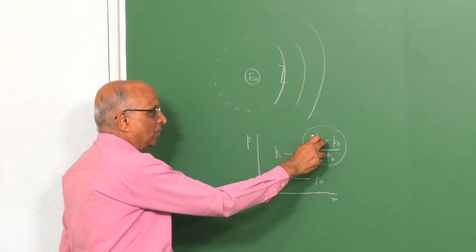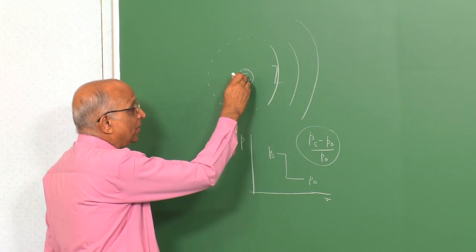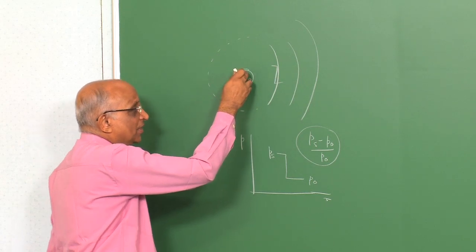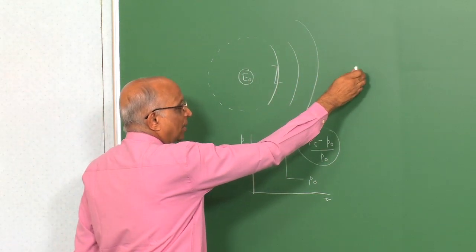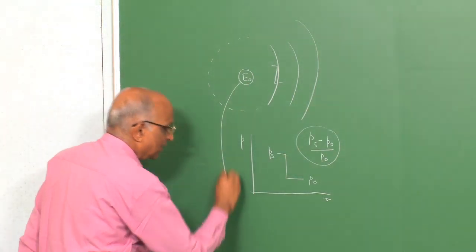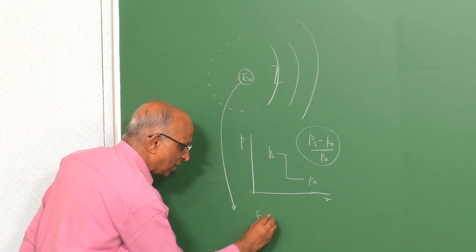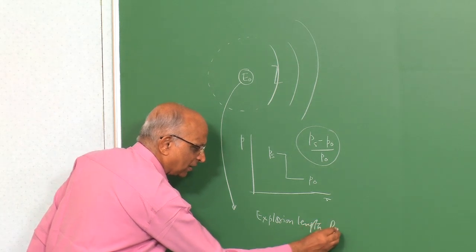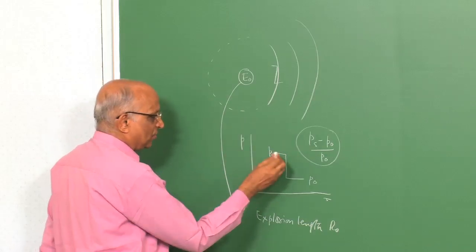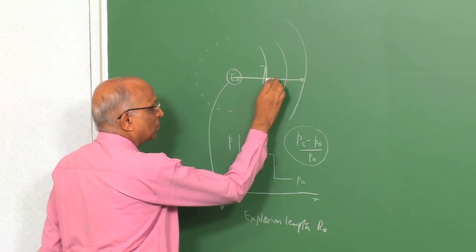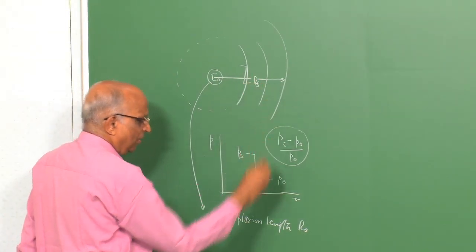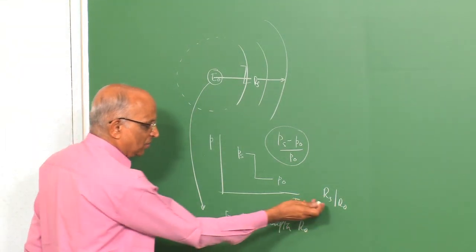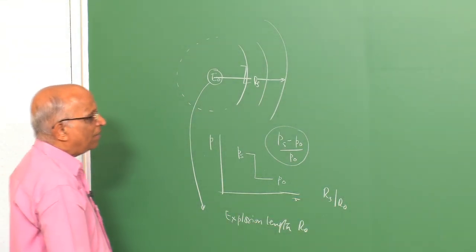We determined this overpressure as a function of distance. When more energy is released, the same blast wave strength is formed at a larger distance. Therefore, we scaled the energy release in terms of an explosion length — a characteristic length R0 — and expressed the blast wave distance Rs non-dimensionalized as Rs divided by R0, which we called SAC scaling.